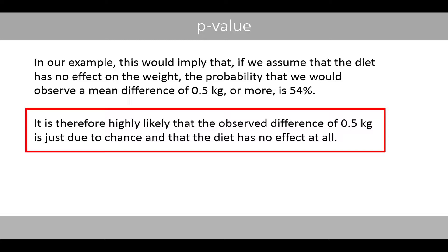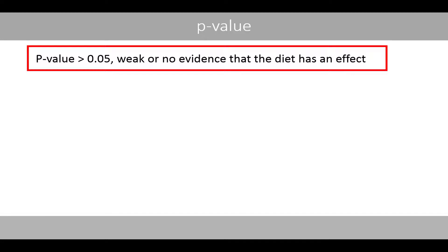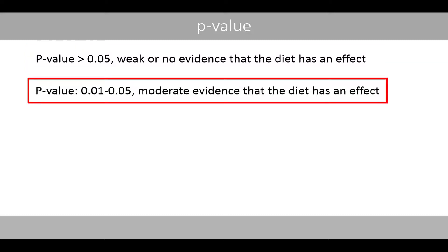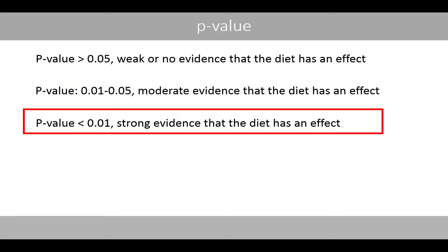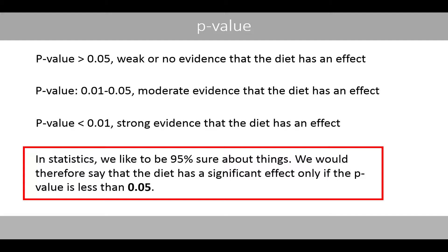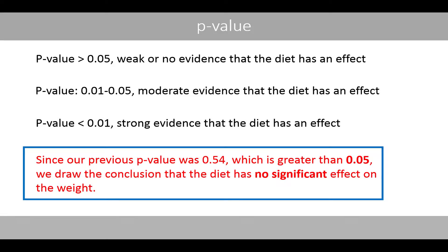If the p-value is greater than 0.05, this implies that there is weak or no evidence that the diet has an effect. If the p-value is between 0.01 and 0.05, this implies that there is moderate evidence that the diet has an effect. Whereas if the p-value is less than 0.01, that implies there is strong evidence that the diet has an effect. In statistics, we like to be 95% sure about things, so we would say that the diet has a significant effect only if the p-value is less than 0.05. Since our p-value was 0.54, which is greater than 0.05, we draw the conclusion that the diet has no significant effect on the weight.